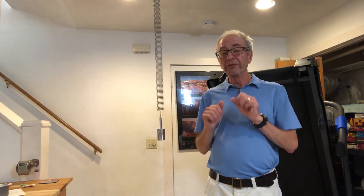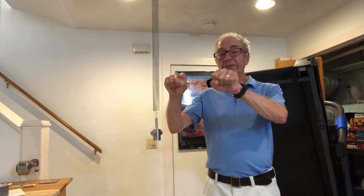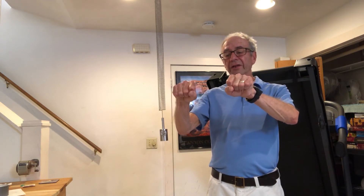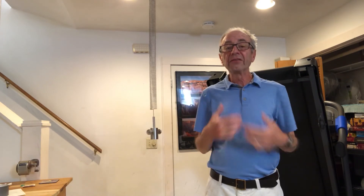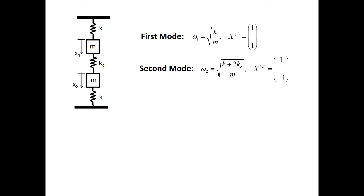Now what I'll be showing on a PowerPoint slide is a somewhat different system, but still one which exhibits beating. We'll have two masses connected to each other by a spring, with an additional spring connected to ground on each side. There are two modes of vibration: one in which both masses move back and forth with the same frequency and phase, and another in which they move in opposite phase but with the same frequency — synchronous motion.